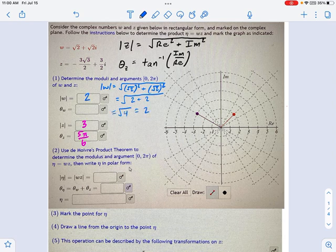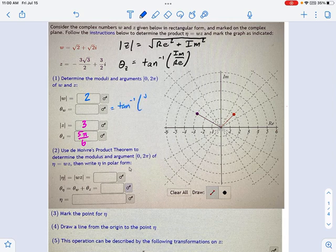The way I would find the argument of it is to take the inverse tangent. So what is the inverse tangent of the imaginary part, which is radical 2, over the real part, which is also radical 2? So in other words, what's the inverse tangent of 1?